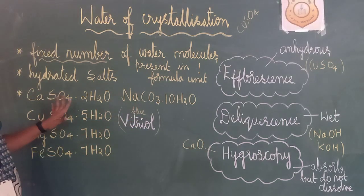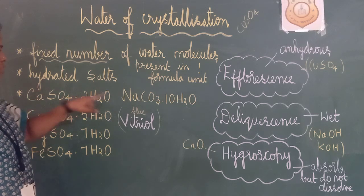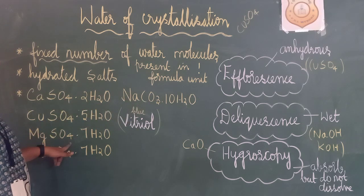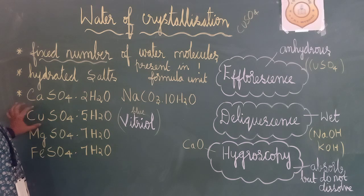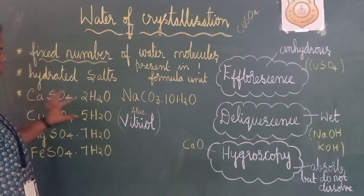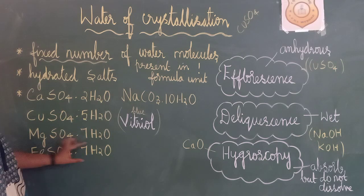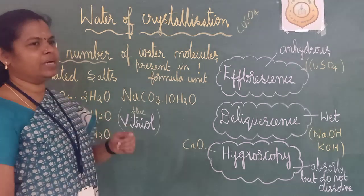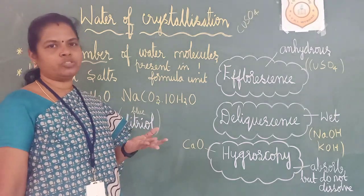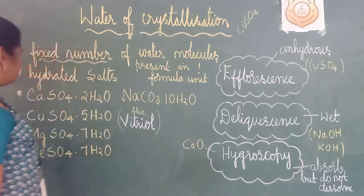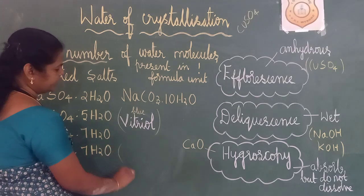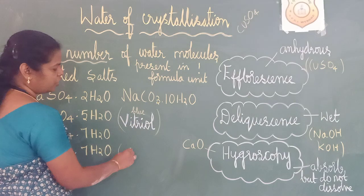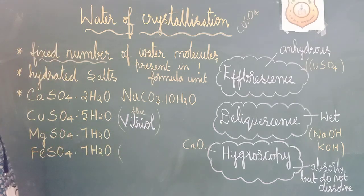All other salts — calcium sulfate, sodium carbonate decahydrate, magnesium sulfate — are white. Only two are vitriols by color. Copper sulfate is blue, so it is called blue vitriol. Ferrous sulfate is pale green in color — I will show you in the lab. So if copper sulfate is blue vitriol, ferrous sulfate will be called green vitriol.